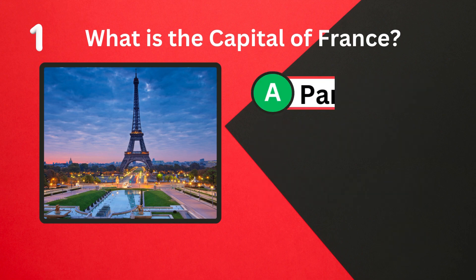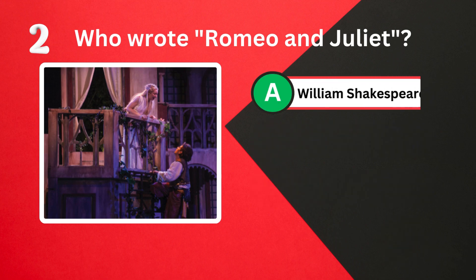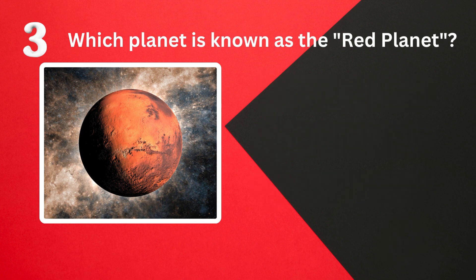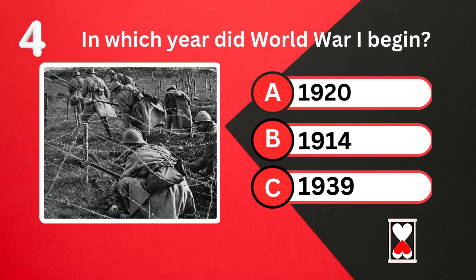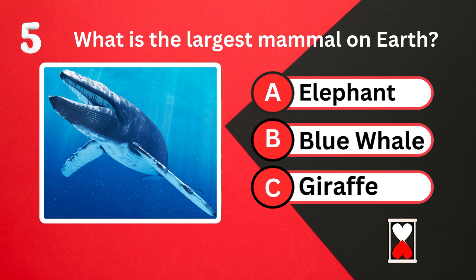What is the capital of France? Paris. Who wrote Romeo and Juliet? William Shakespeare. Which planet is known as the red planet? In which year did World War One begin? 1914. What is the largest mammal on earth?